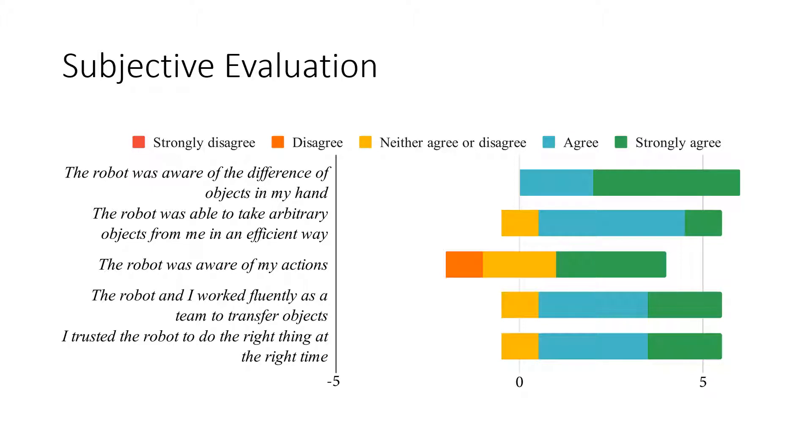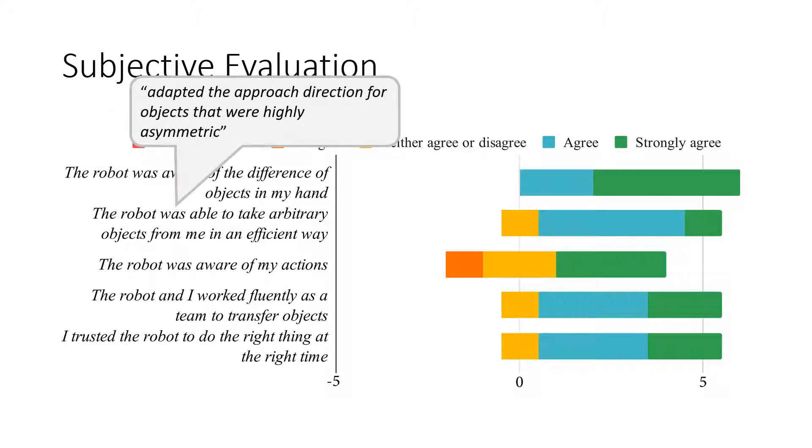In the questionnaire, we saw that most participants agreed or strongly agreed with statements like the robot was able to take arbitrary objects sufficiently or the robot was aware of my actions. In open-ended questions, they commented that it was able to adapt its planned motion depending on the object in their hand and seemed to adjust to very different object geometries quite well. Some noted that the robot adapted the approach direction for objects that were highly asymmetric.